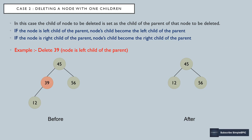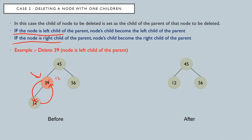Case two is a bit harder. Your node might have a left child or a right child. If your node does not have a left child and you are going to delete it, what you do is first swap the values — so 39 gets replaced with 12 and 12 gets replaced with 39. Then delete 39, because now 39 is a leaf node. The final tree will look like this, with 12 placed there and 39 deleted.